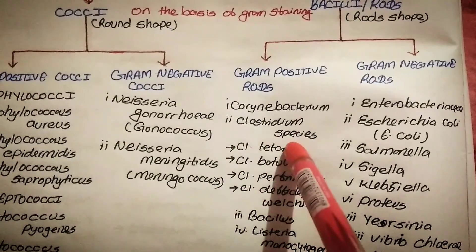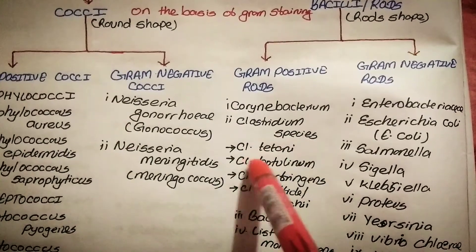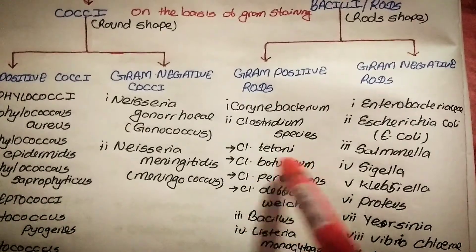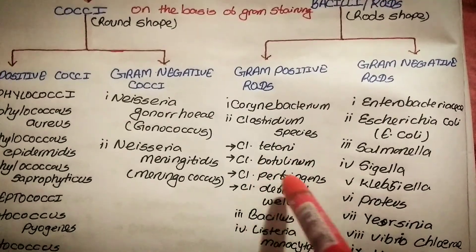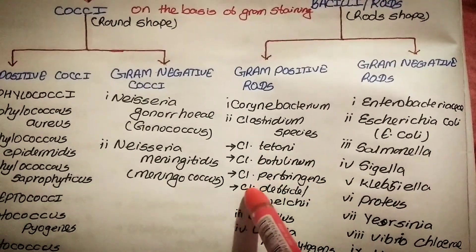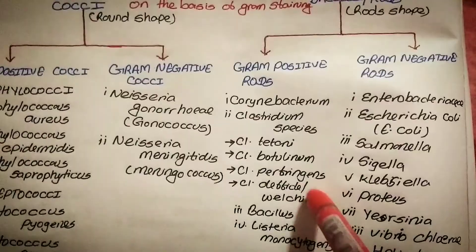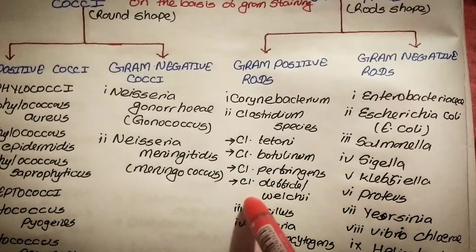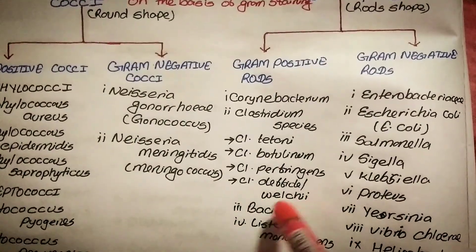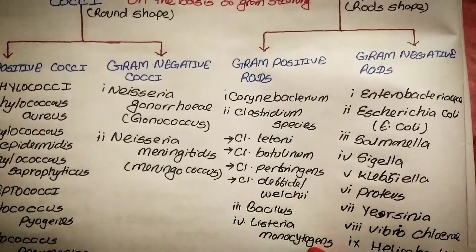Inside Clostridium there are four types: Clostridium tetani, Clostridium botulinum, Clostridium perfringens, and Clostridium difficile. Also included are Bacillus species and Listeria monocytogenes. These are all gram-positive rods.